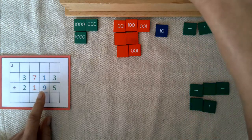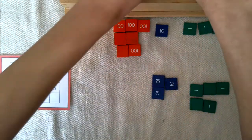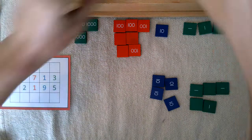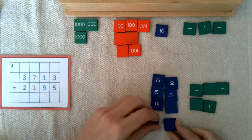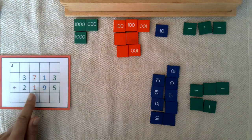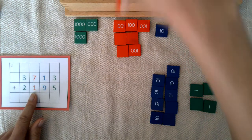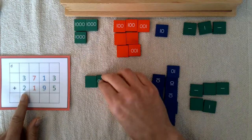Plus 9 tens: one, two, three, four, five, six, seven, eight, and nine. One hundred and two thousands: one, two.